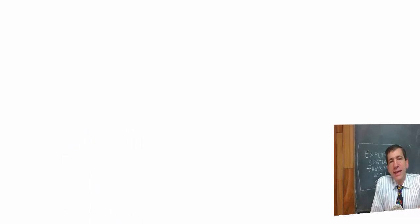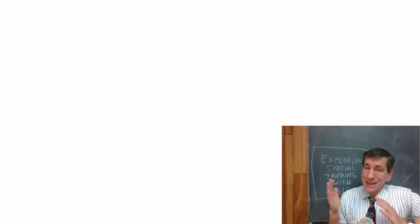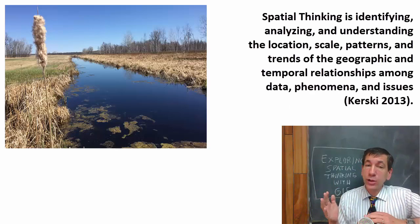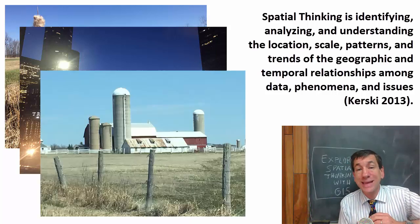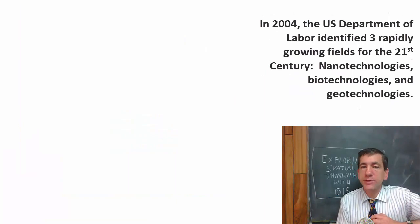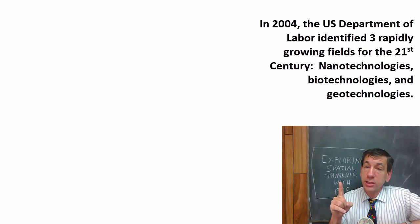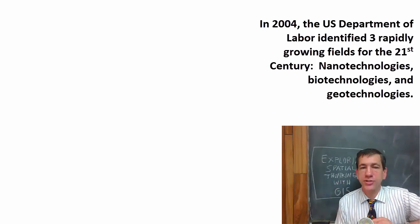What are spatial thinking and geotechnologies? Spatial thinking is identifying, analyzing, and understanding the location, scale, patterns, and trends of the geographic and temporal relationships among data, phenomena, and issues. In 2004, the U.S. Department of Labor identified three rapidly growing fields for the 21st century: nanotechnologies, biotechnologies, and geotechnologies.